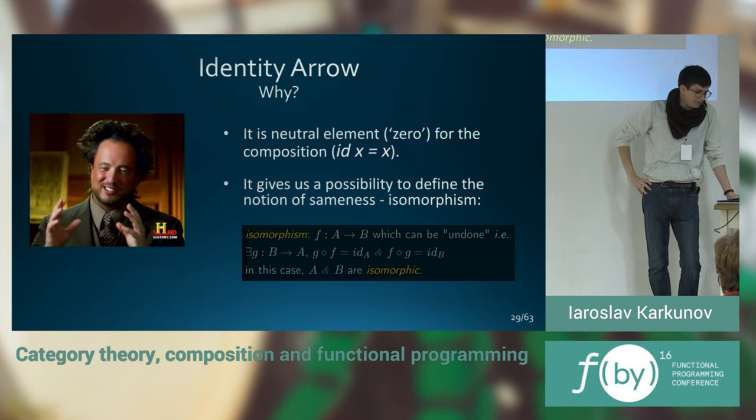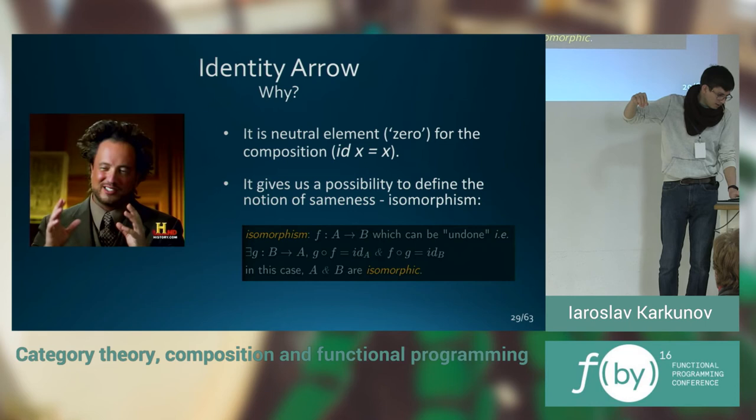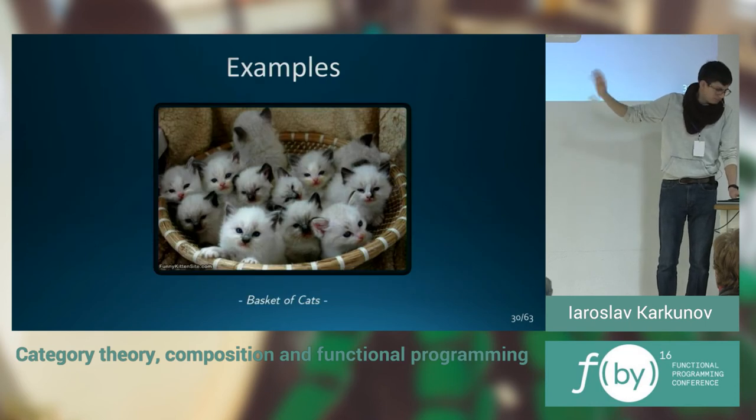Isomorphism, actually, is just an arrow that can be undone. It means that it has the inverse to the other side. We will not need that now.